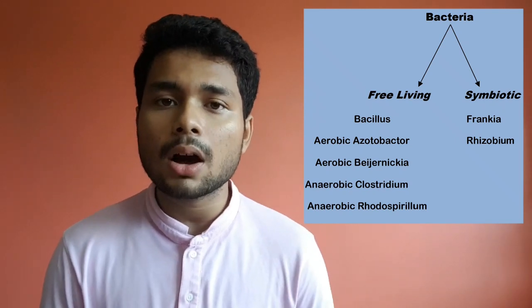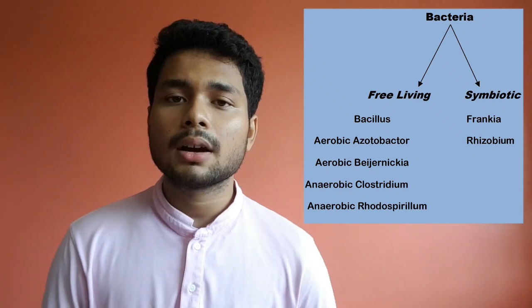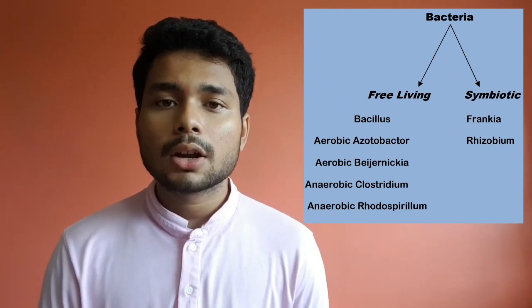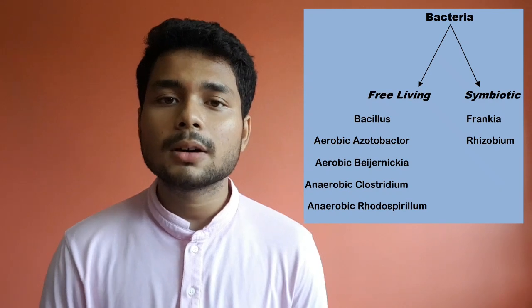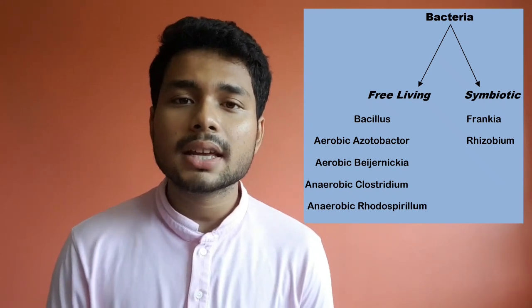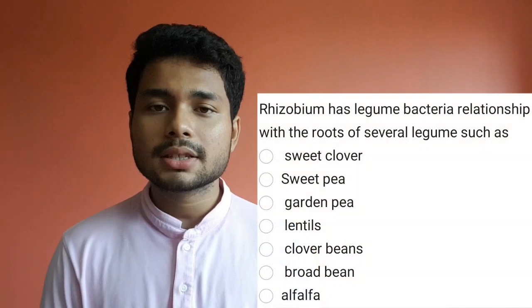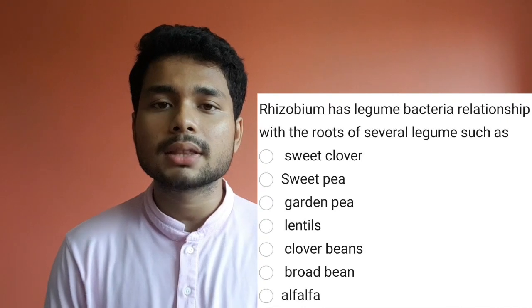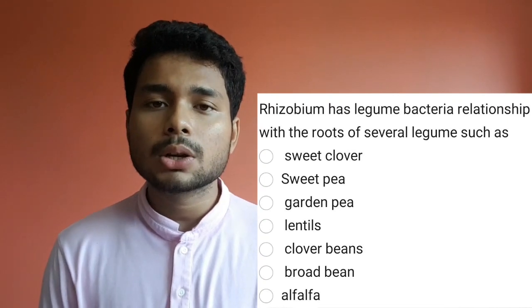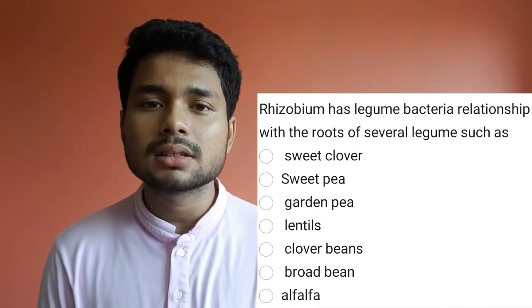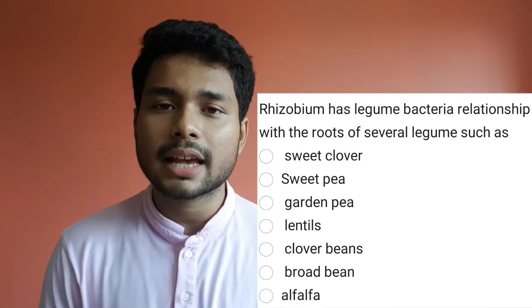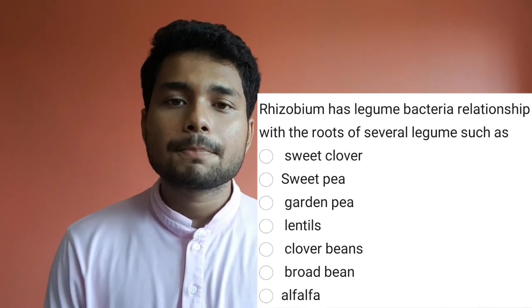For symbiotic bacteria, Frankia shows a mutualistic relationship with non-leguminous plants like alder trees, also called Alnus trees. Rhizobium shows a symbiotic relationship with leguminous plants, which include alfalfa, lentils, clover, beans, etc., as mentioned in the NCERT.